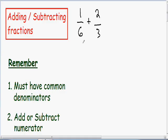Here in this example, we have a denominator of 6 in one fraction and a denominator of 3 in another fraction. So obviously they're not the same — we do not have common denominators. What we need to do is find the least common multiple between 6 and 3.